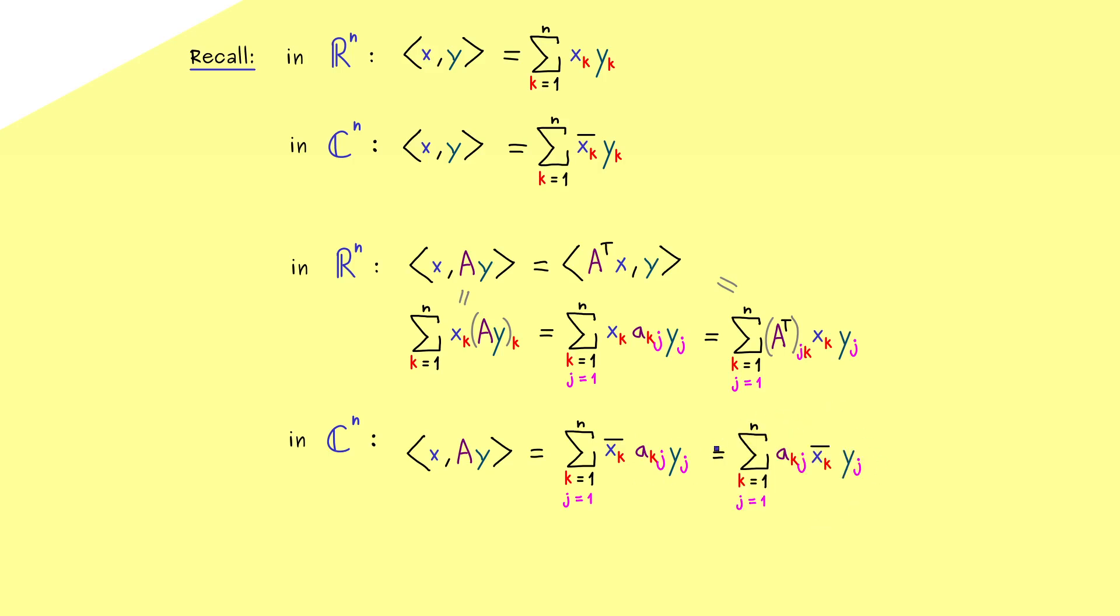However, it changes something if we want to push this entry a_kj to the components of x. Because then, if we want to rewrite that as a matrix vector product as before, we first have to exchange the entries, the indices as before, but we also have to add a complex conjugation. This means we can use the entries of A^T, but we also need the complex conjugation on them. This is needed because we know we have the complex conjugation on the whole first entry of the inner product. So only by doing that, we can write the inner product now with the matrix A in the first argument.